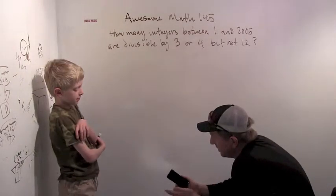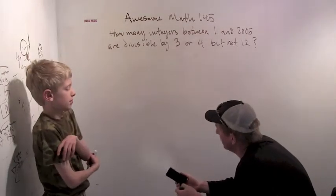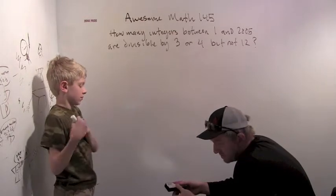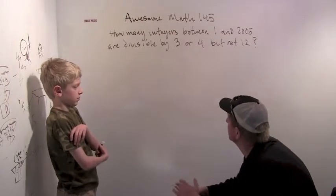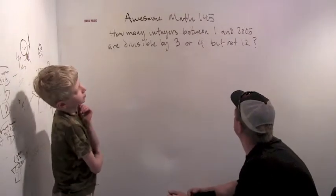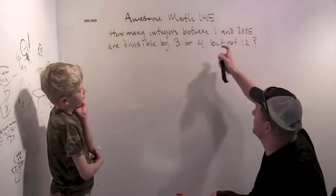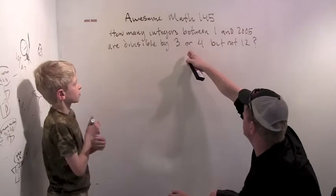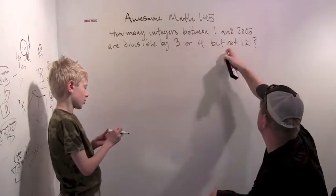There's a problem your brother and I were working on today, and I thought it would be actually pretty interesting just to hear your thoughts about it too, because it's actually kind of a neat problem. How many integers between 1 and 2005 are divisible by 3 or 4 but not 12?